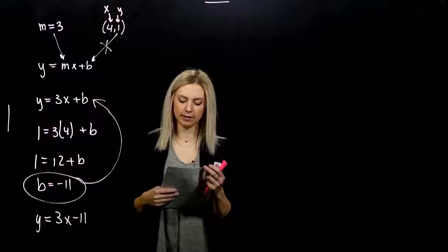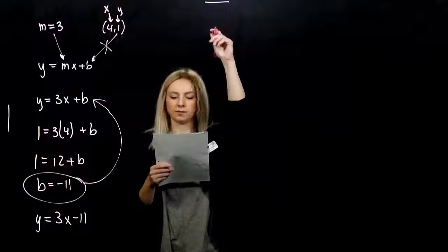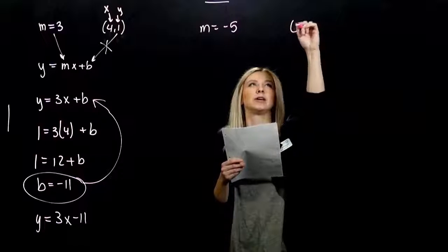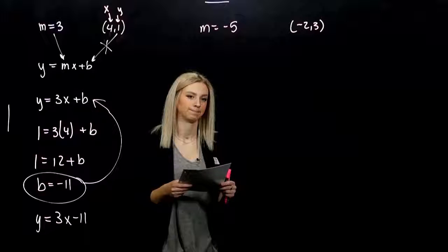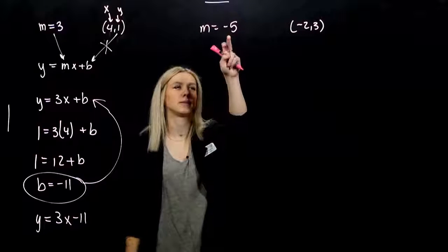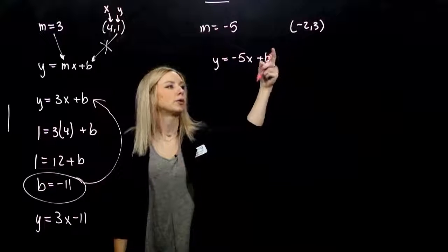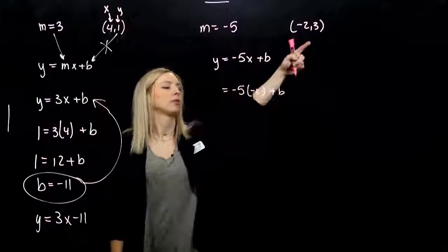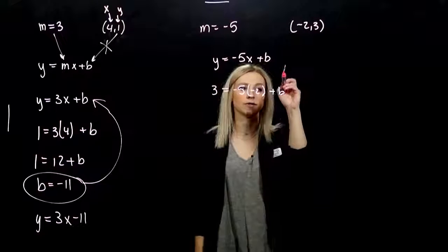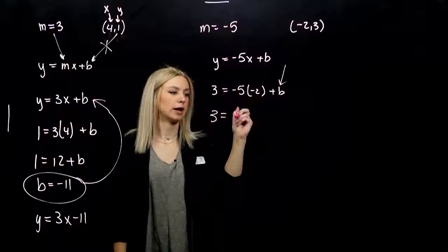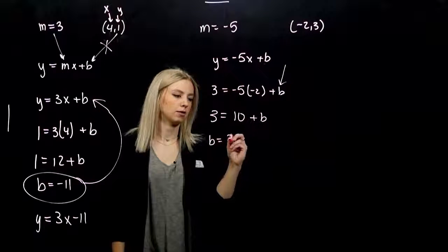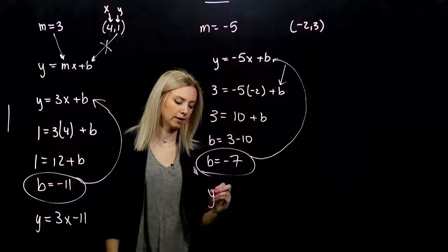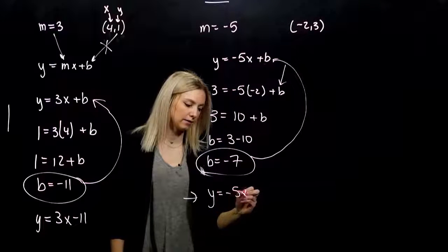Let's do another one. Find the equation of the line with slope negative 5 that contains the point (-2, 3). Again, we don't have the y-intercept, but I know my slope is negative 5. When I plug in minus 2 for x, I get out 3 for y. Negative times a negative gives us positive 10, so b is 3 minus 10, which is minus 7. The equation of this line is y equals negative 5x minus 7.